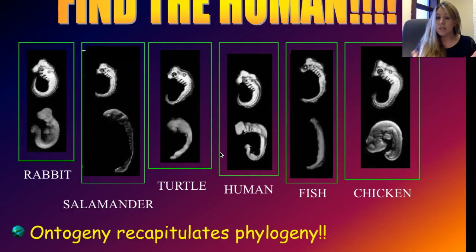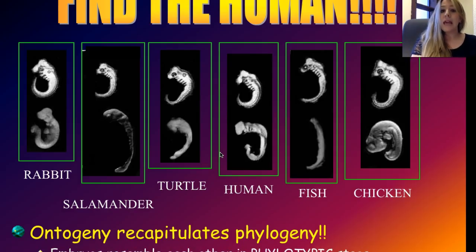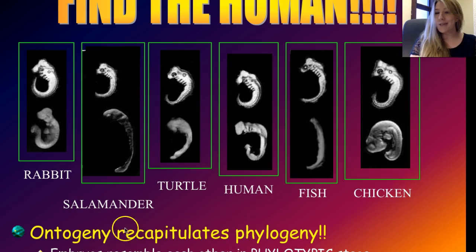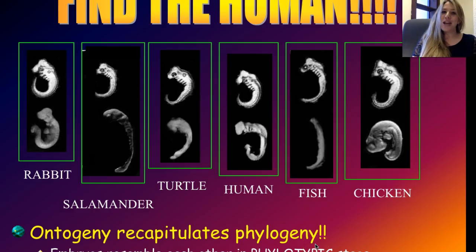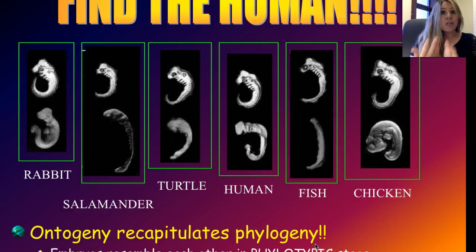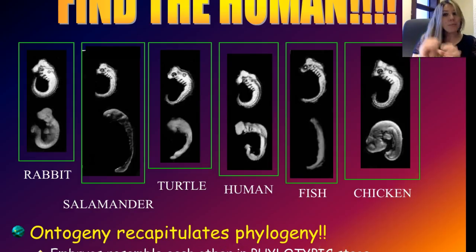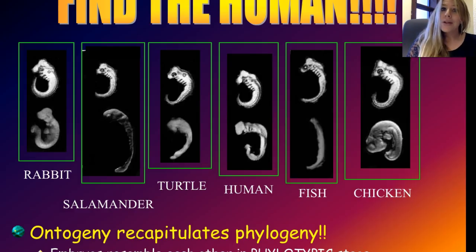If we shared a common ancestor, all descendants should go through the same kinds of embryonic development. This line of evidence is called comparative embryology. There's a phrase to remember it by: 'ontogeny recapitulates phylogeny.' Ontogeny refers to developmental stages, recapitulates means retraces, and phylogeny means our evolutionary heritage. In other words, our evolutionary heritage is retraced by looking at our stages of development.